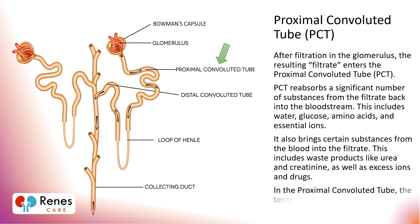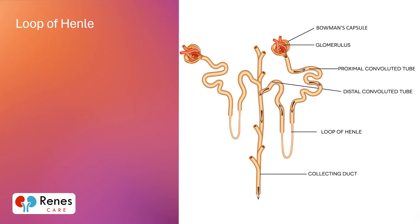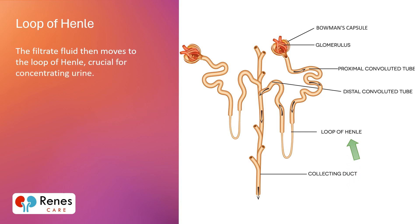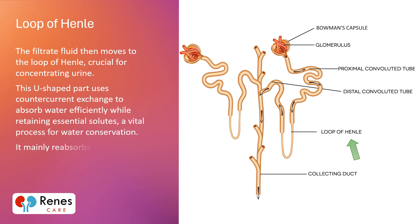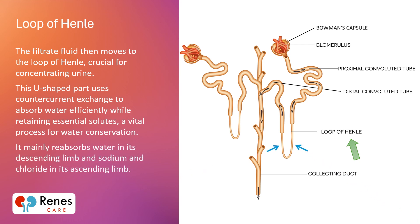In the proximal convoluted tube, the term proximal refers to its location, which is near the glomerulus. The filtrate fluid then moves to the loop of Henle, which is crucial for concentrating urine. This U-shaped part uses counter-current exchange to absorb water efficiently while retaining essential solutes — a vital process for water conservation. It mainly reabsorbs water in its descending limb, and sodium and chloride in its ascending limb.